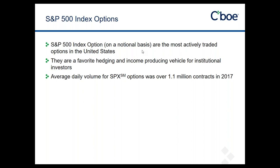SPX index options — everybody's familiar with the S&P 500. The index options are the most actively traded options in the US, not necessarily in the world, but definitely in the United States. The Korea Exchange and India index options actually do a little bit better than S&P 500 index options. Last year was the second year that we did over a million contracts a day, which comes to quite a hefty notional value.